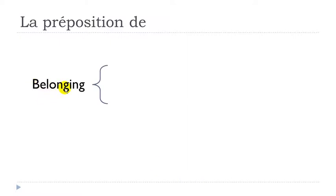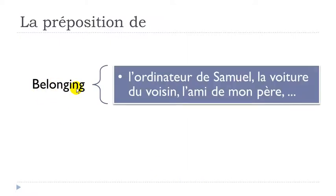Another possibility is when you want to introduce the belonging concept. You use the preposition de — for example: l'ordinateur de Samuel. With this structure, you say that l'ordinateur, the computer, belongs to Samuel. You simply put the noun, then de, then the name of the person.